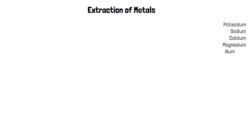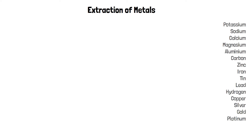The way metals are extracted depends on their reactivity and we'll need to look at the reactivity series. This is a list of metals in order of decreasing reactivity, so the most reactive are at the top and the least reactive are at the bottom. We also include carbon and hydrogen on the list because where metals are relative to carbon and hydrogen determines how the metal will be extracted and whether or not it will react with acid.